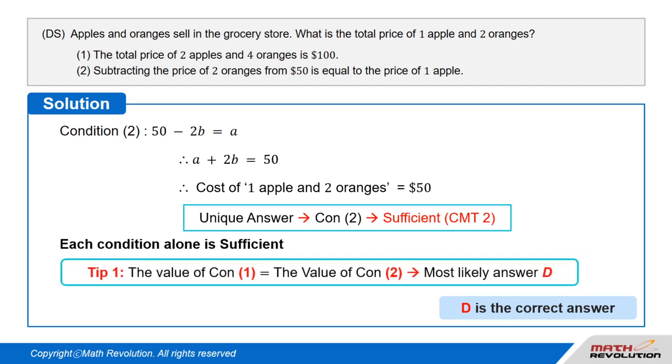Also, according to tip 1, if both the conditions give the same value, the cost of 1 apple and 2 oranges is $50 here, the most probable answer is D.